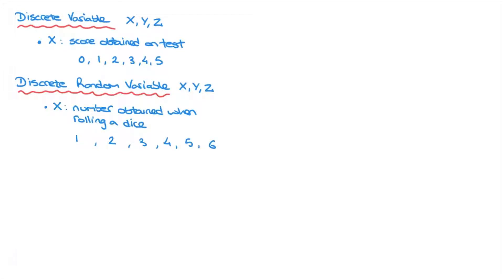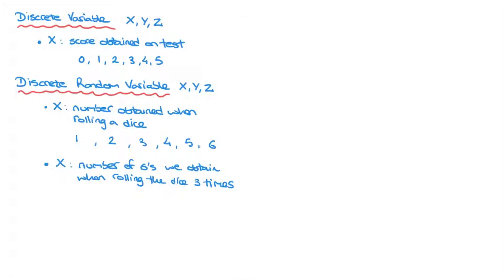Or let's say we roll the same dice three times in a row and we're interested in the number of sixes we obtain. We could define the discrete random variable capital X as the number of sixes obtained when rolling the dice three times. If we roll a dice three times, we can either get 0, 1, 2, or 3 sixes, so capital X could equal 0, 1, 2, or 3. Each of these possible values depends on chance — each has a certain probability.